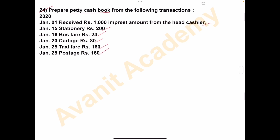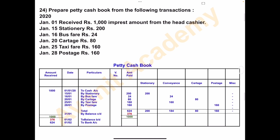So all these entries we have to record in the petty cash book — a 6-mark problem. Let's start the solution. The petty cash book columns are: amount received, date, particulars, voucher number, amount paid, and analysis of payment. The analysis columns are: stationery, then bus fare, cartage and taxi fare which come under conveyance charges, then cartage, postage, and miscellaneous.